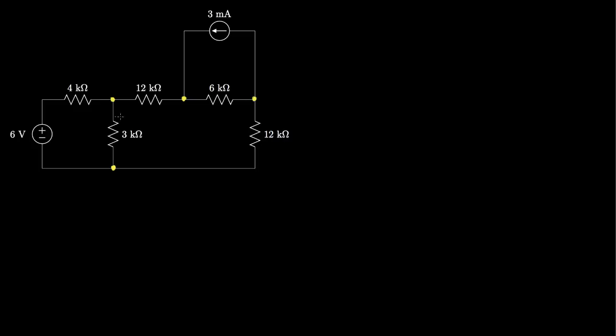To distinguish between nodes that connect three elements and a node that connects only two, we sometimes call the nodes that connect three or more 'extraordinary nodes,' and the nodes that connect only two elements are called 'ordinary nodes.' Next, we identify one of the nodes as the reference or ground node. This is often the node that connects the most elements.